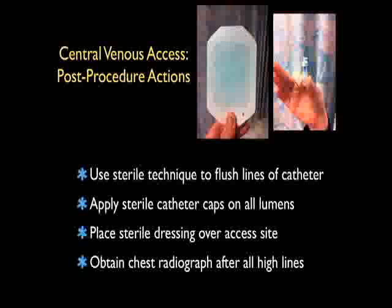Critical actions following placement of a central venous catheter include using sterile technique to flush all lines of the catheter and then putting sterile catheter caps on all lumens. We then place a sterile dressing like the tegaderm shown in the picture to the upper right over the access site, and obtain a chest radiograph after all high lines to look for placement of the catheter tip and also to rule out a pneumothorax.